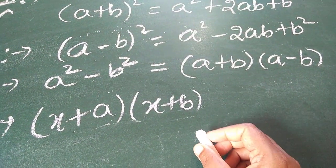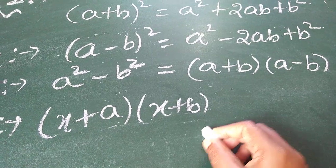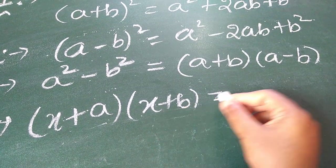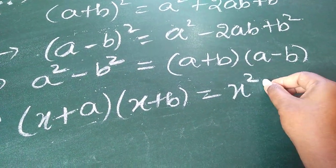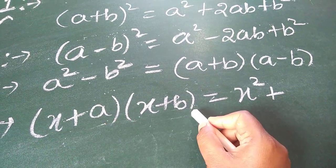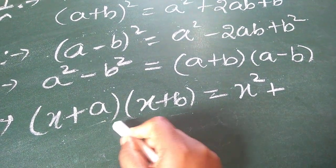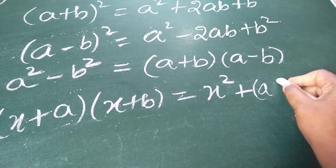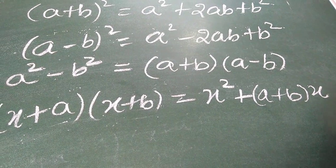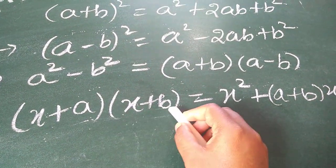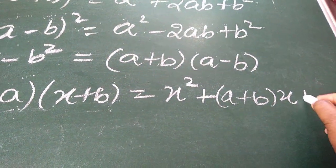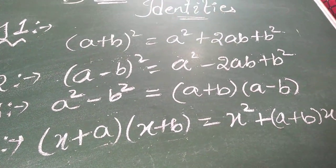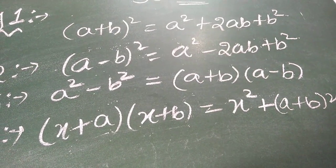The solution for x plus a into x plus b: we should take the first term x and multiply with the second bracket x. So x square, plus when you multiply x into b and a into x — in both cases we get x as common. Hence, a plus b into x. Next, we multiply a into b — binomial multiplication. So, I am getting my fourth identity. Based on these four identities only, today I am going to solve a few examples.